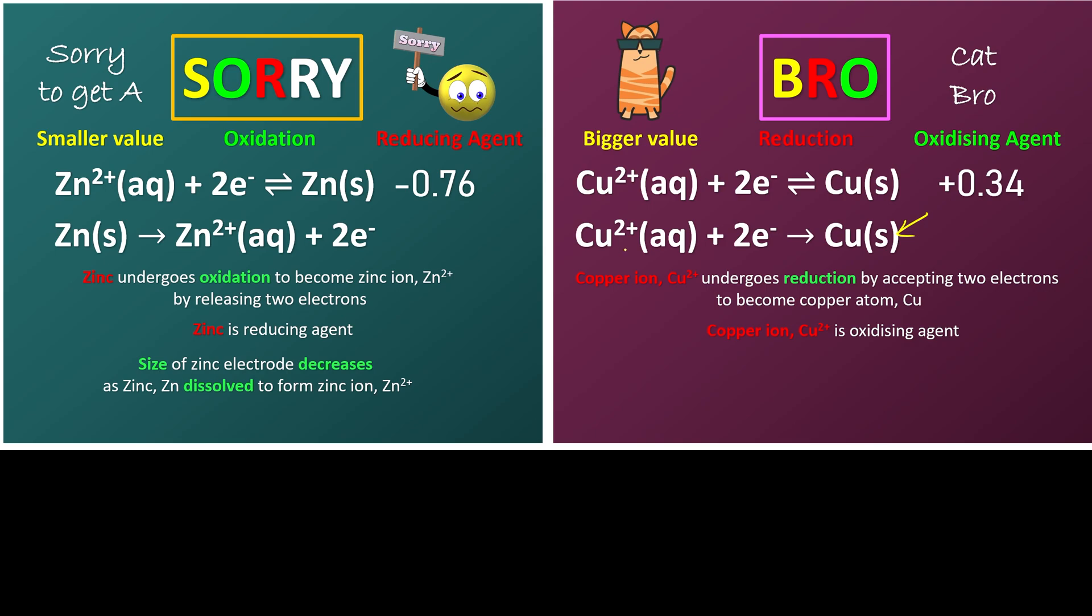Not only that, what we know is copper 2+ is actually blue in color, but now they become the brown solid. So eventually the blue color intensity in the solution will actually decrease.